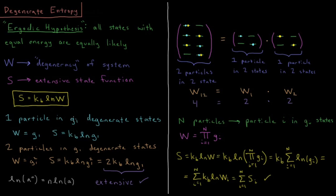Let's imagine one particle in G1 degenerate states. W there equals G1 and S equals Boltzmann constant times the natural log of G1, Kb ln G1.